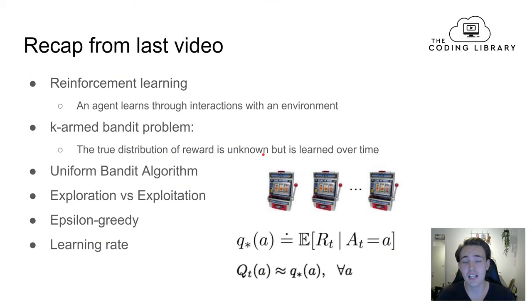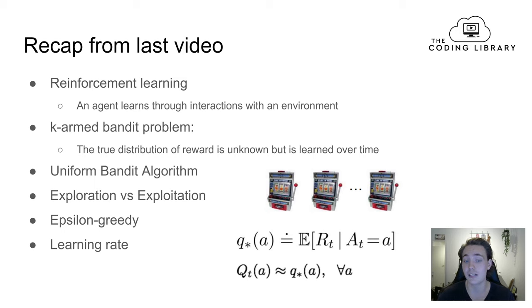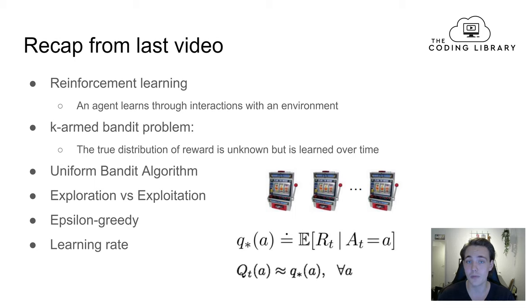First, let's recap from the last video where we had a short introduction to reinforcement learning. We learned that reinforcement learning is where an agent learns through interacting with the environment it is placed in. We talked about the k-armed bandit problem where the true distributions of rewards were unknown for the slot machines but learned over time using exploration and exploitation. The agent was pulling the arm, exploiting what it already knew, and using the epsilon-greedy algorithm to explore other arms to find their distributions, so in the end it would always pull the best arm and get the maximum reward.